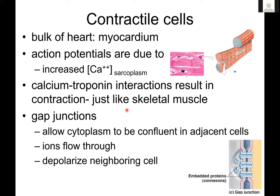We also have gap junctions. Cardiomyocytes are attached to each other via intercalated discs, which are areas of cell junction with lots of gap junctions as well as desmosomes. Gap junctions allow cytoplasm to be shared between two neighboring cells, so ions flow through. If one cell is actively depolarizing and experiencing an influx of sodium ions, those sodium ions can flow through the gap junctions into the next cell and begin depolarizing it.